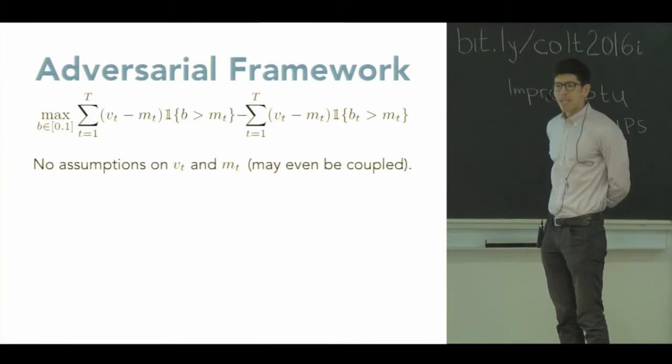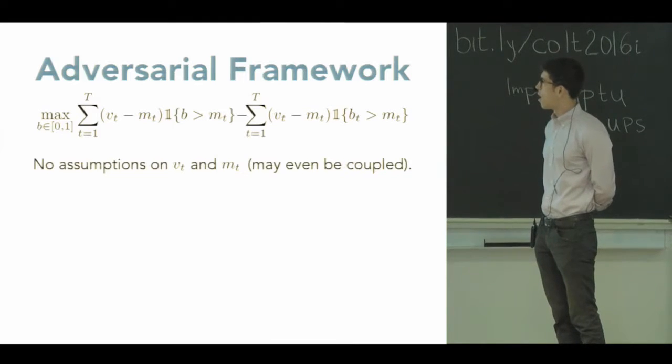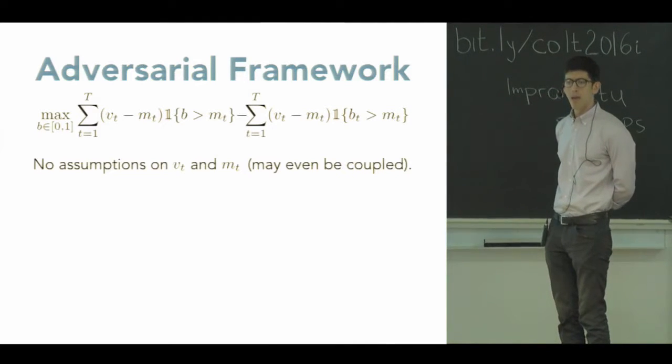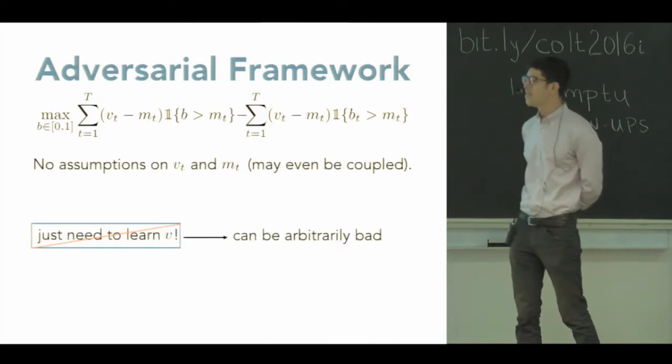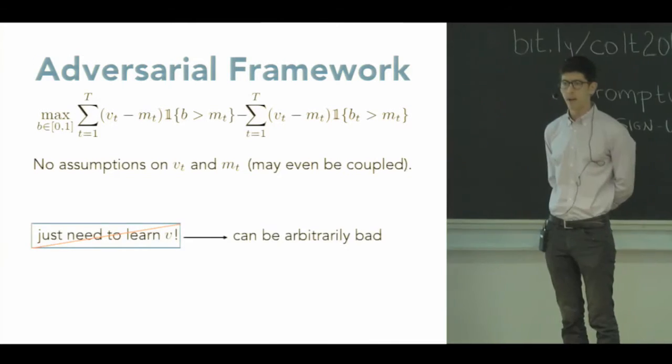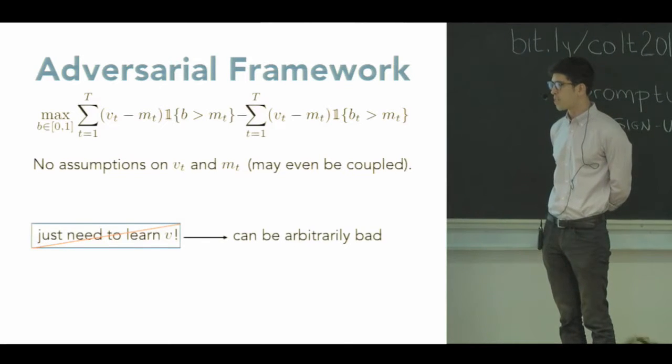The adversarial setup is significantly more difficult. Again, we don't have any assumptions on V_T and M_T. They may even share information. And moreover, in this case, it is not just enough to learn the expected value. In fact, the performance of just the expected value alone can be arbitrarily bad. So that's not going to work as a strategy for this problem.